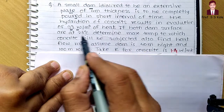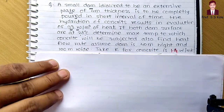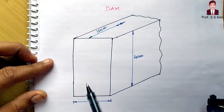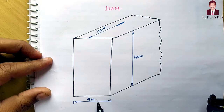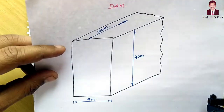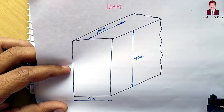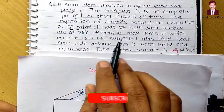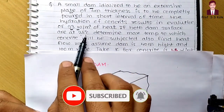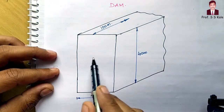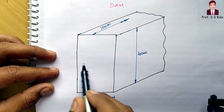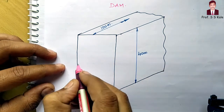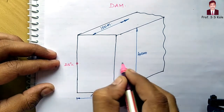If both dam surfaces are at 25 degrees Celsius — from the given data, let me plot the dam. This is a dam wall whose thickness is 4 meter, and the heat generation qg is 93 watt per meter cube. When the heat is generated inside the dam, the temperature will rise, but both dam surfaces are at 25 degrees Celsius — the left side and the right side.